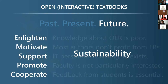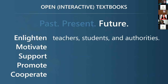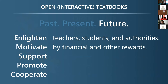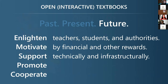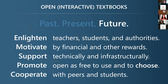In order to enable the sustainability of open textbooks in the future, we have to enlighten, motivate, support, promote, and cooperate. We have to enlighten teachers, students, and especially the authorities. We have to motivate them by financial or other rewards, maybe something related to promotions and tenure. We have to support authors willing to share their textbooks in open format by providing proper infrastructure. We have to promote the idea of open—not only as free to use, but also as free to choose. The cooperation between peers and between teachers and students is fundamental.